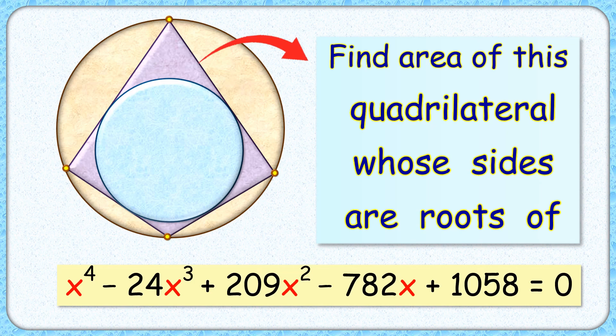Welcome everyone to this interesting question. We are given a bicentric quadrilateral. With respect to the brown circle, it's a cyclic quadrilateral, and with respect to the blue circle, it's a tangential quadrilateral.